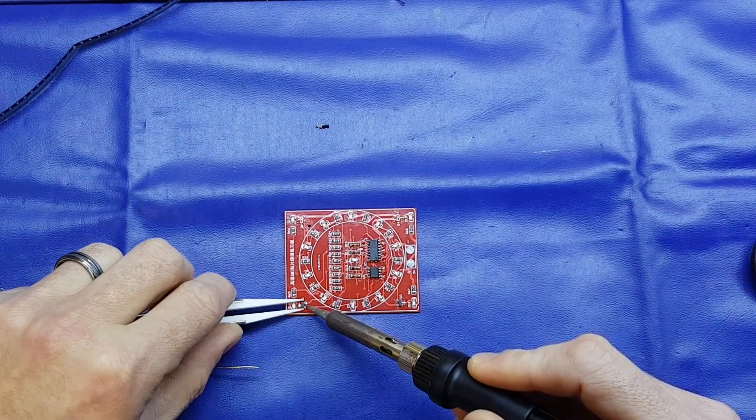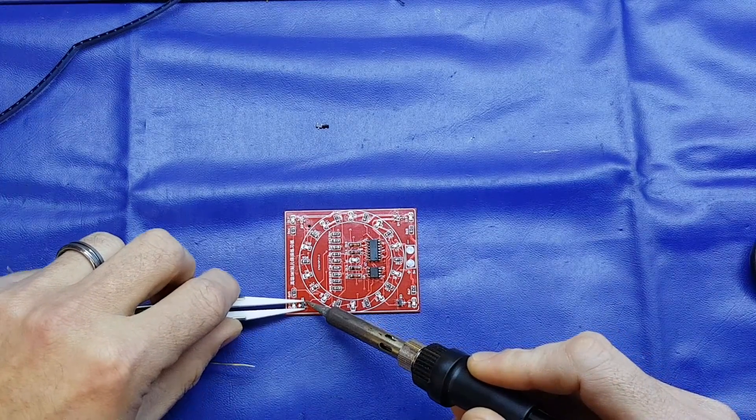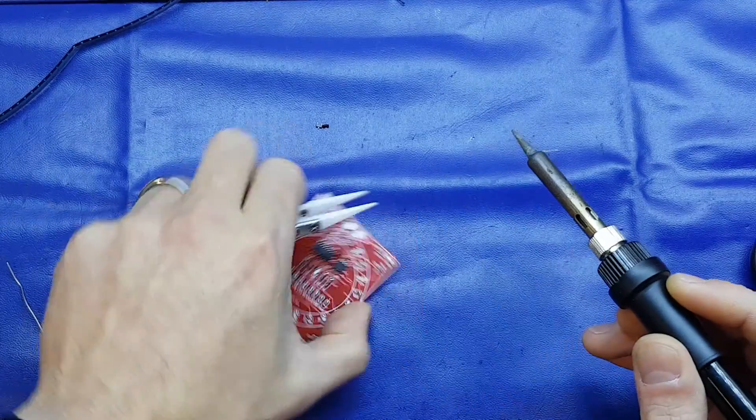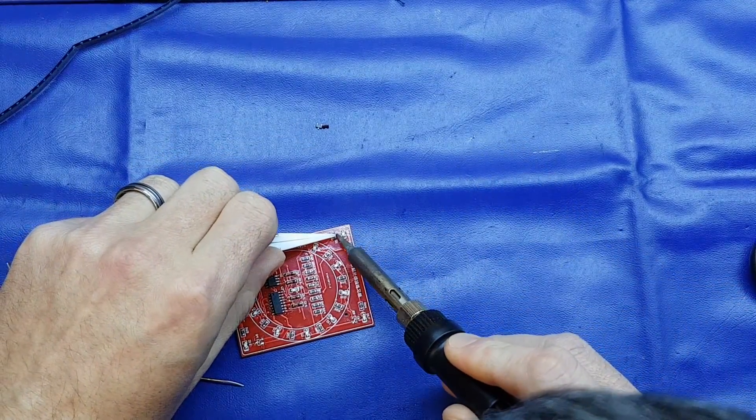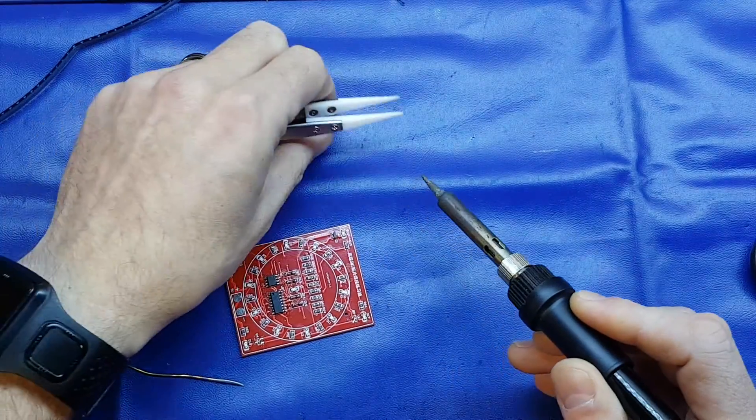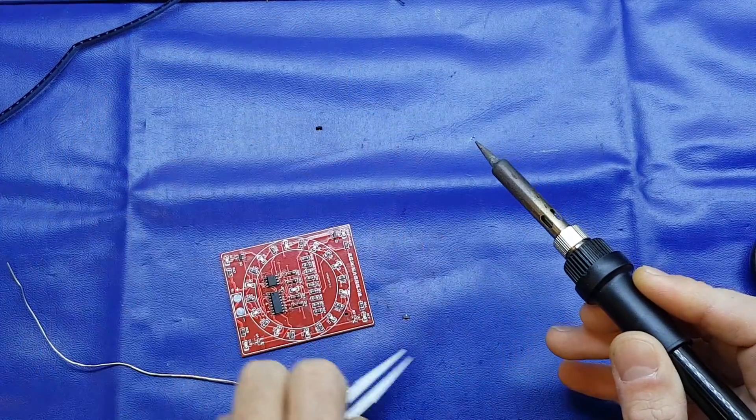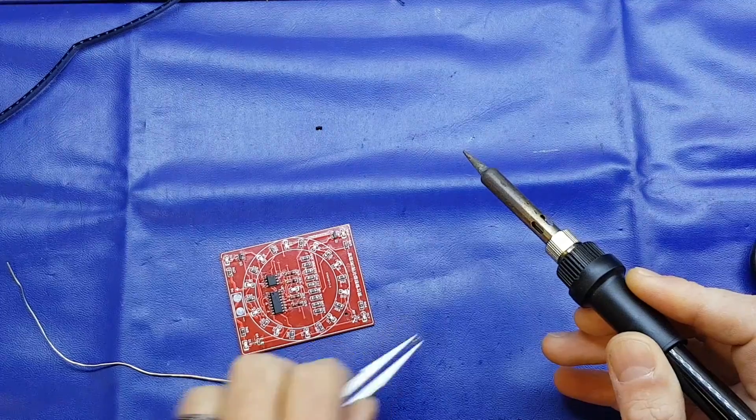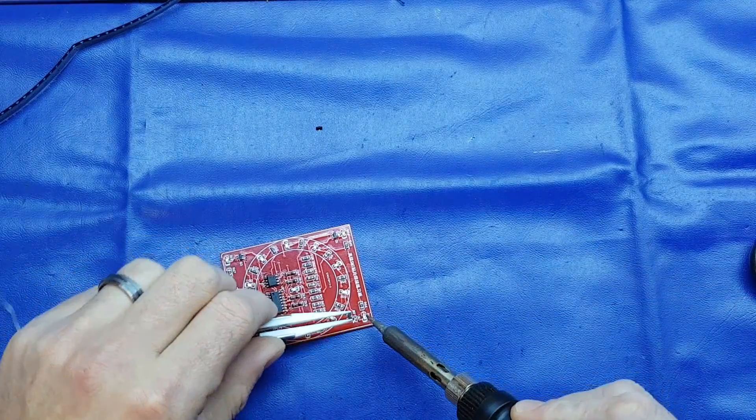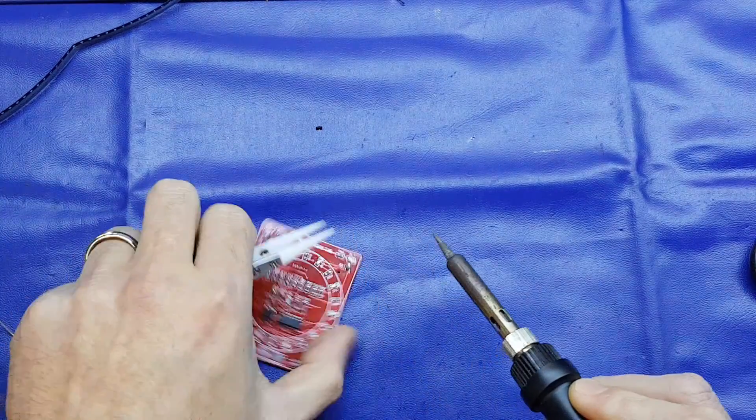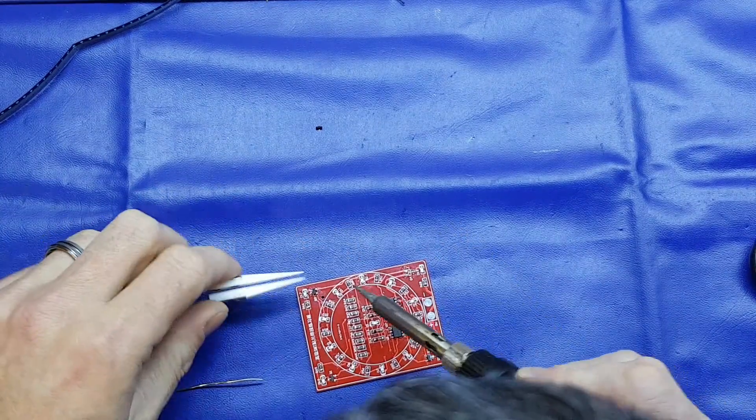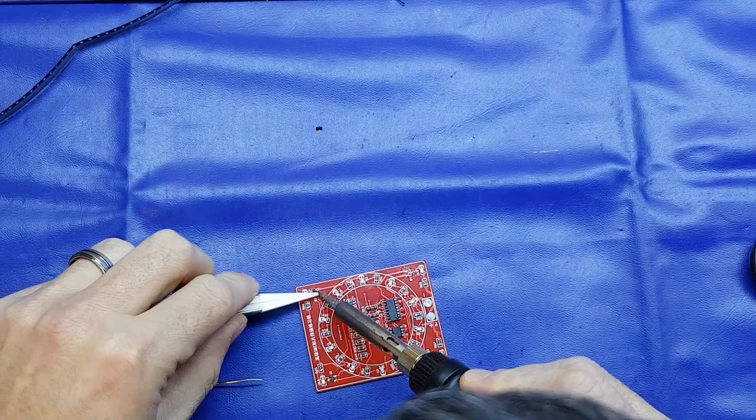And what I'm going to do is, once these are on here, I will go round and apply a little bit more solder, just to make sure that they are actually properly connected. But it is much easier to orientate the board around the component than the other way when you're doing surface mount stuff.